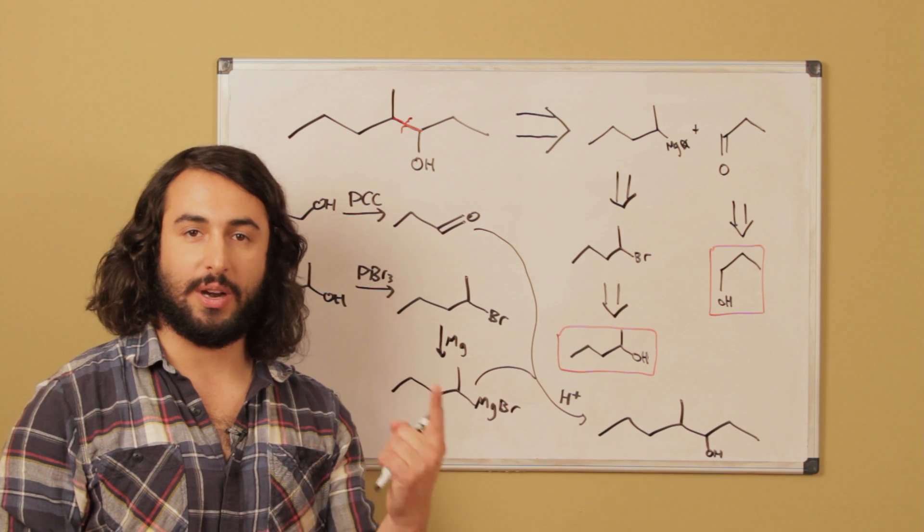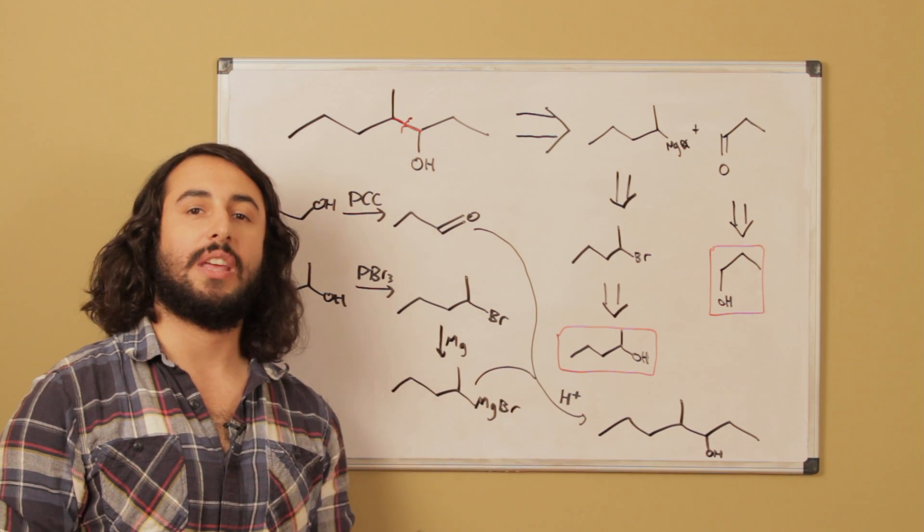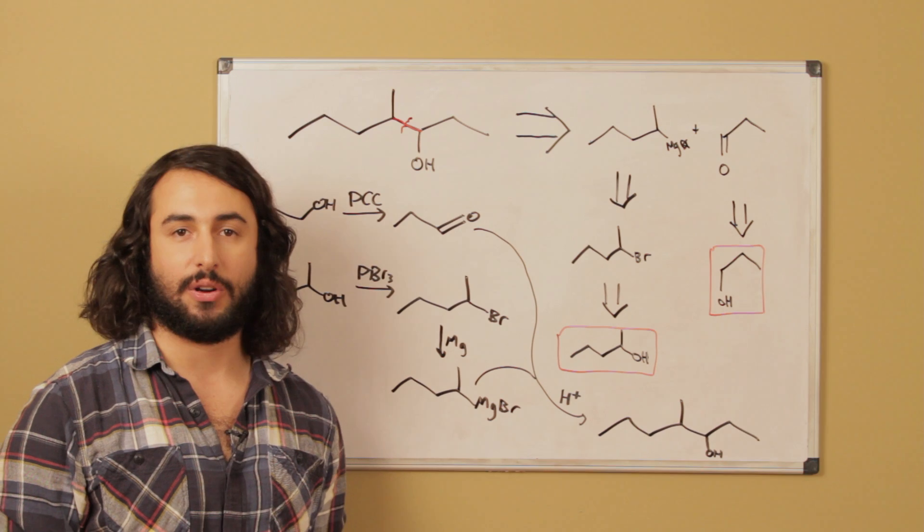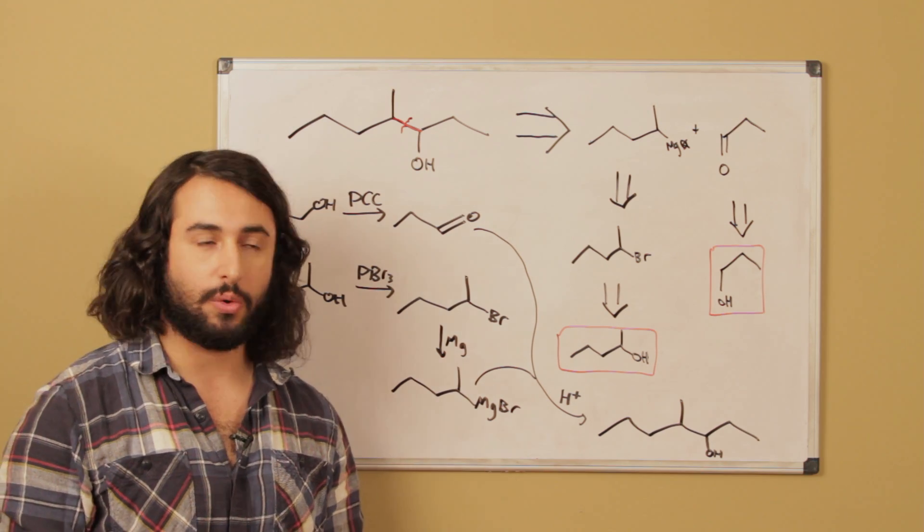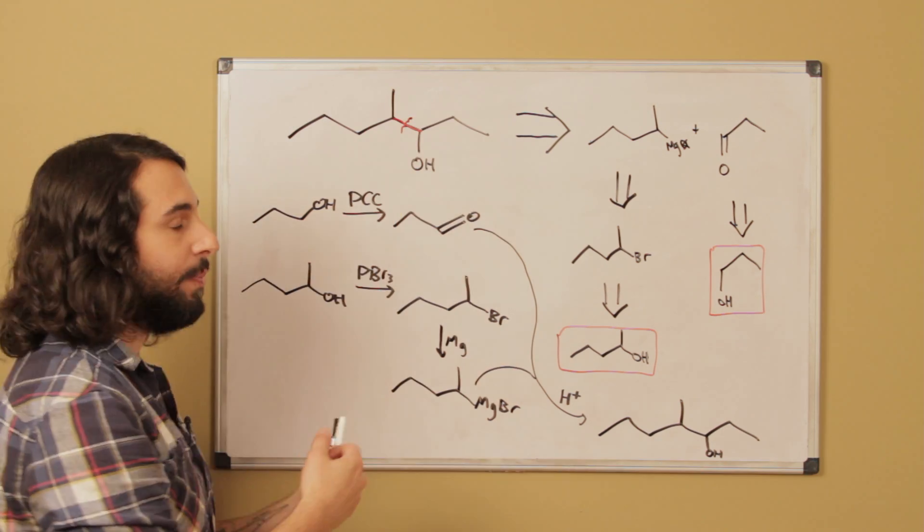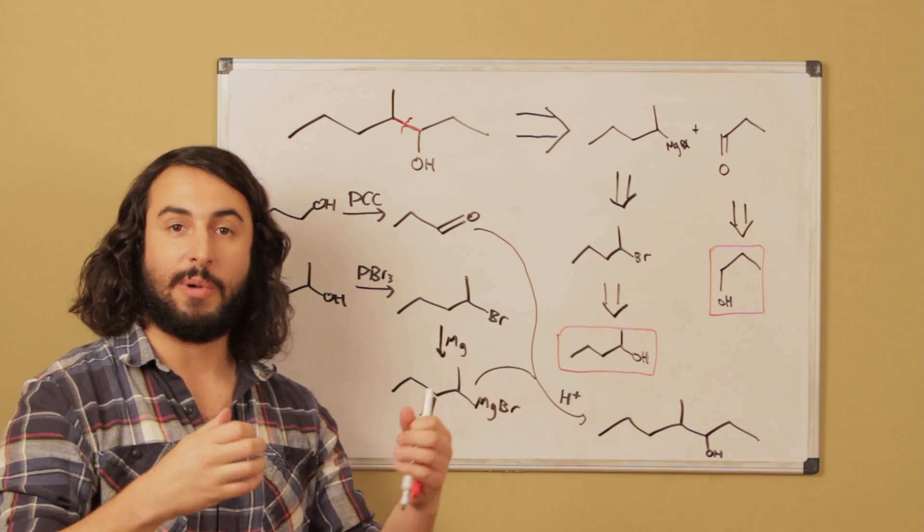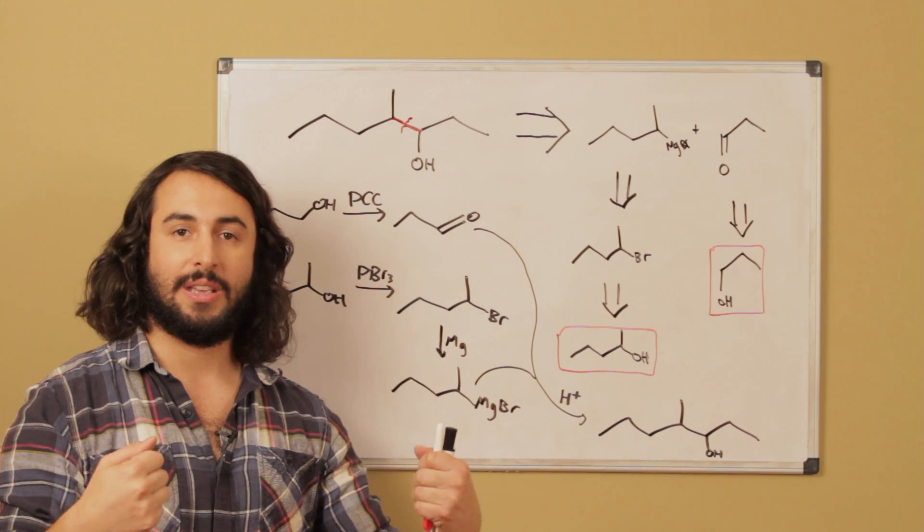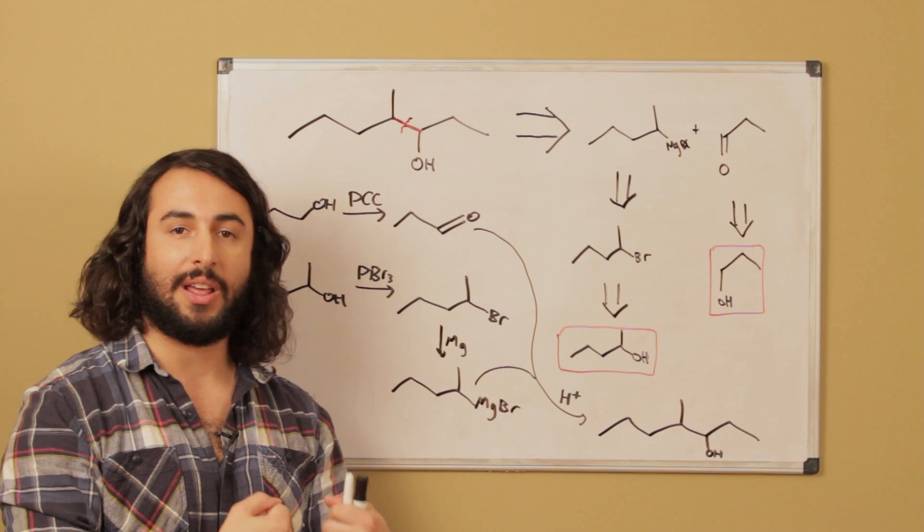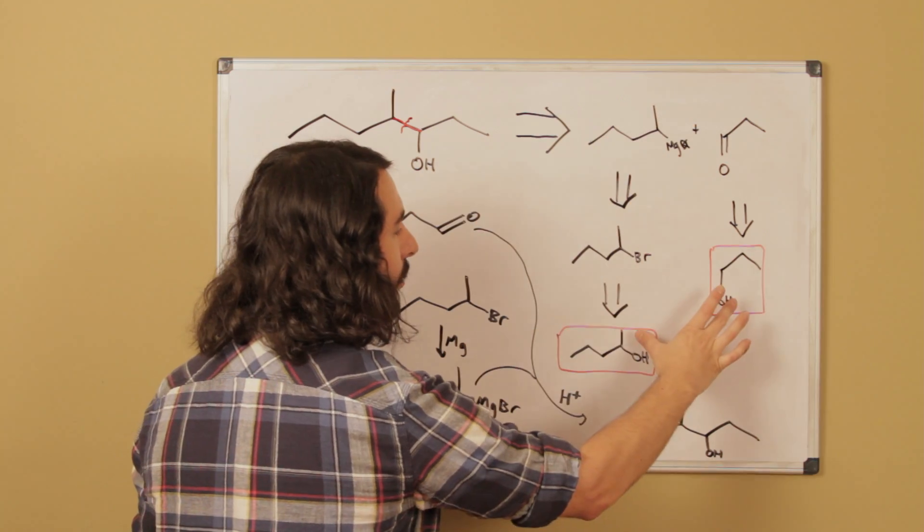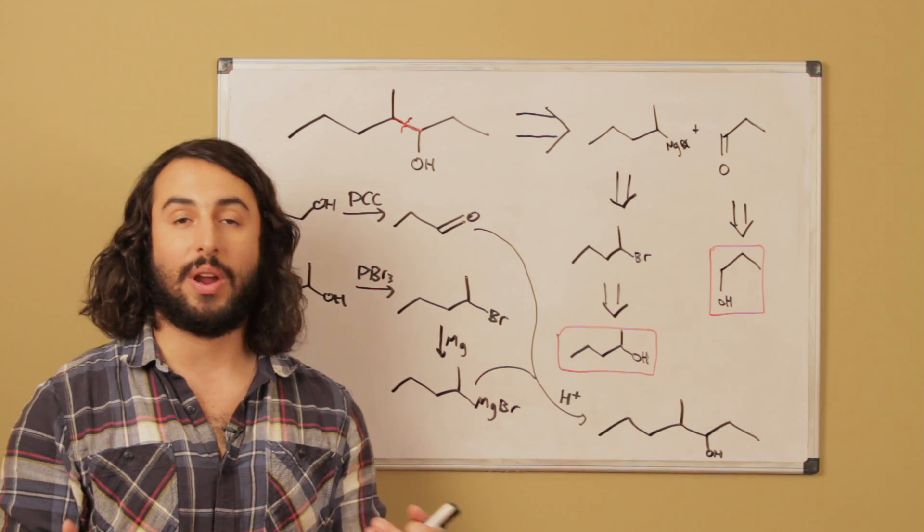So once again to summarize, the key is to look at what kind of molecule we are making, in this case an alcohol, and then think what kind of reactions do I know that make alcohols. In this case grignard was our choice. Pull the target molecule apart in a way that makes sense because we know of a reaction that will put it back together, and then go backwards until we have starting material that meets the criteria of the problem.